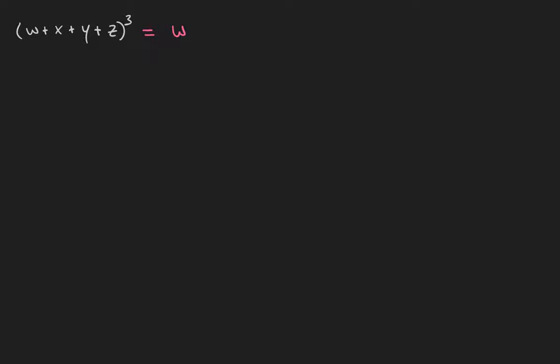First, let's have as many w's as possible. So we have w cubed, and then if we take away a w, we can either put it towards an x or a y or a z. If we take away another w, we can put it towards another x, an x and a y, an x and a z, two y's, a y and a z, or two z's.